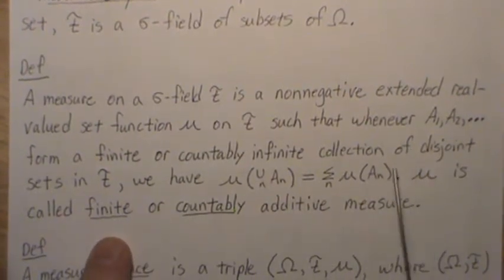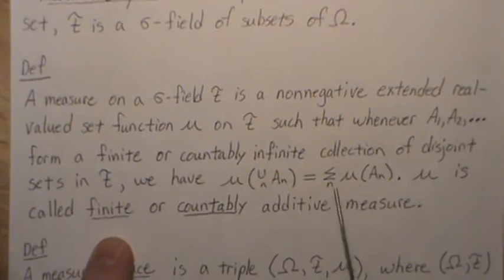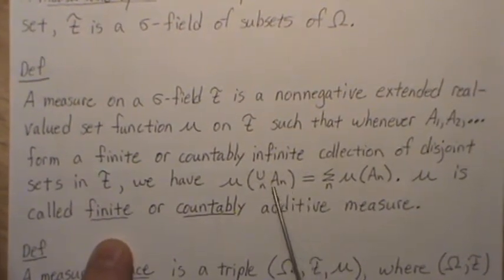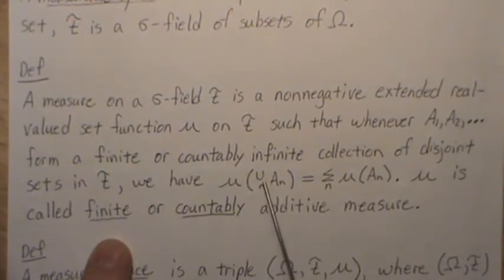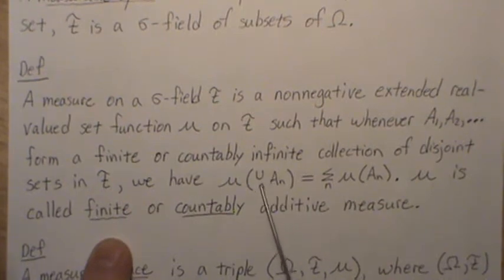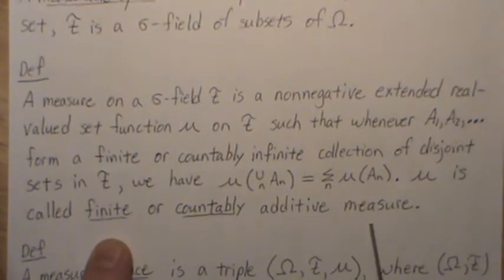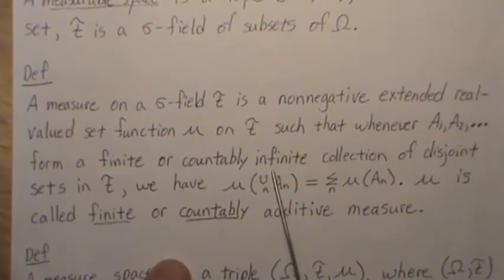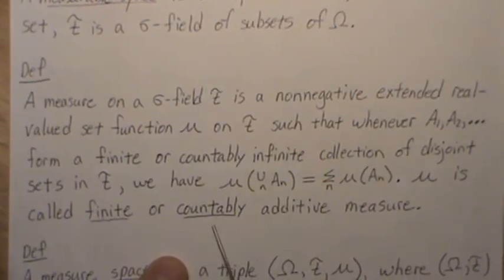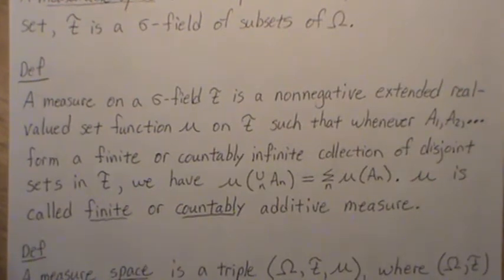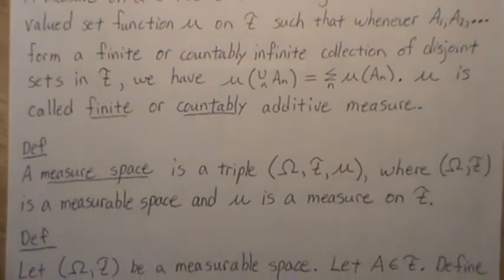If this relationship only holds for a finite sum of sets, then it's called a finite additive measure. If it holds for an infinite number of sets, then it's countably additive measure.